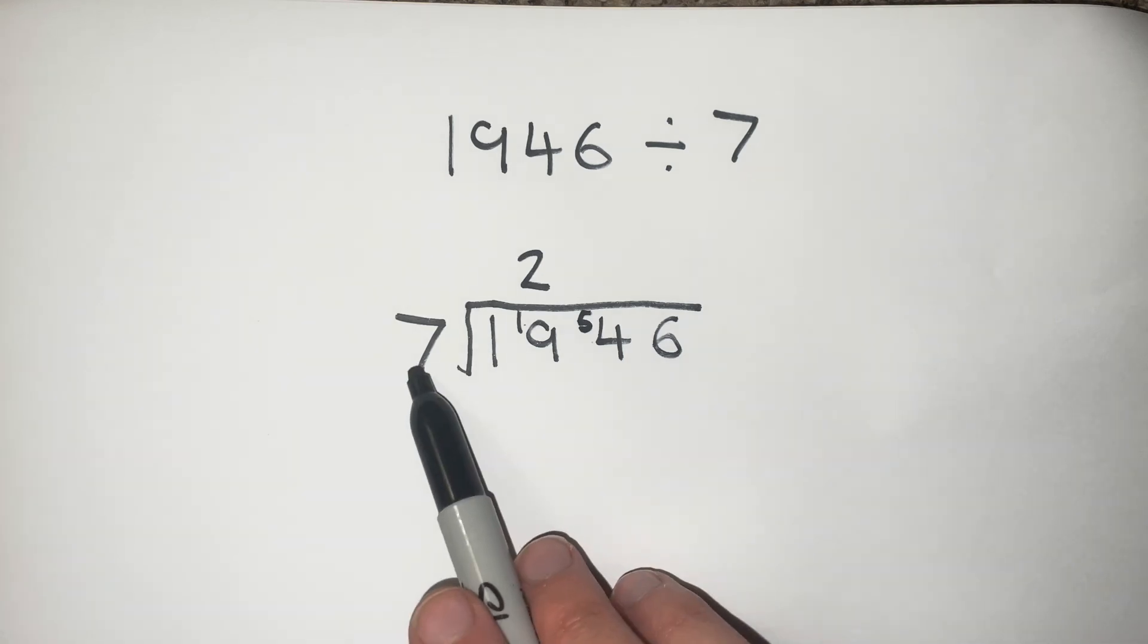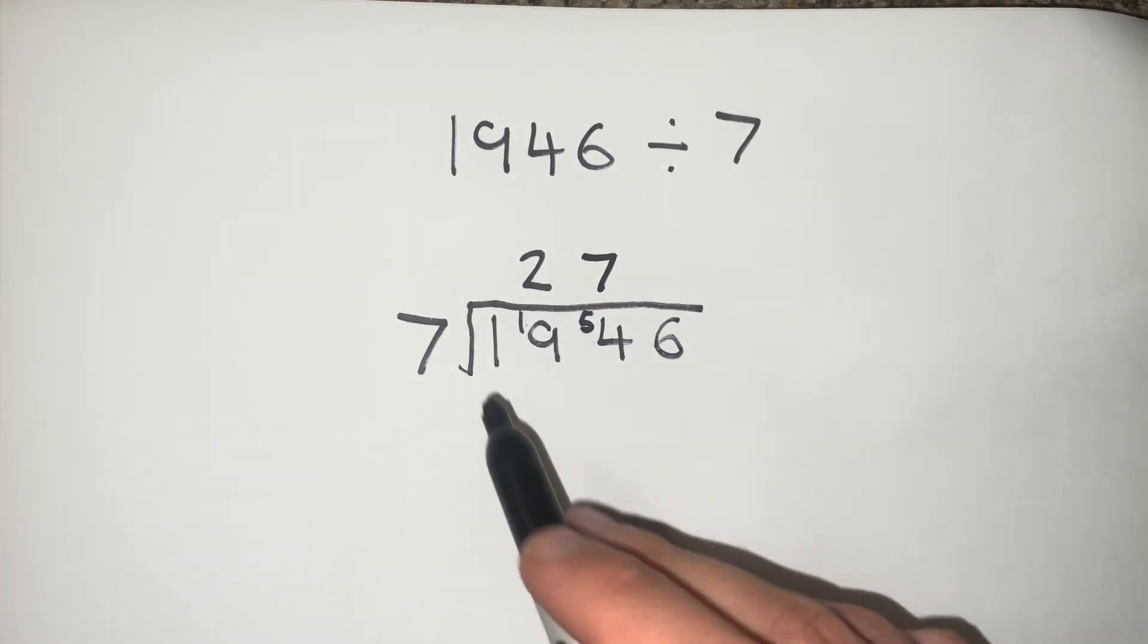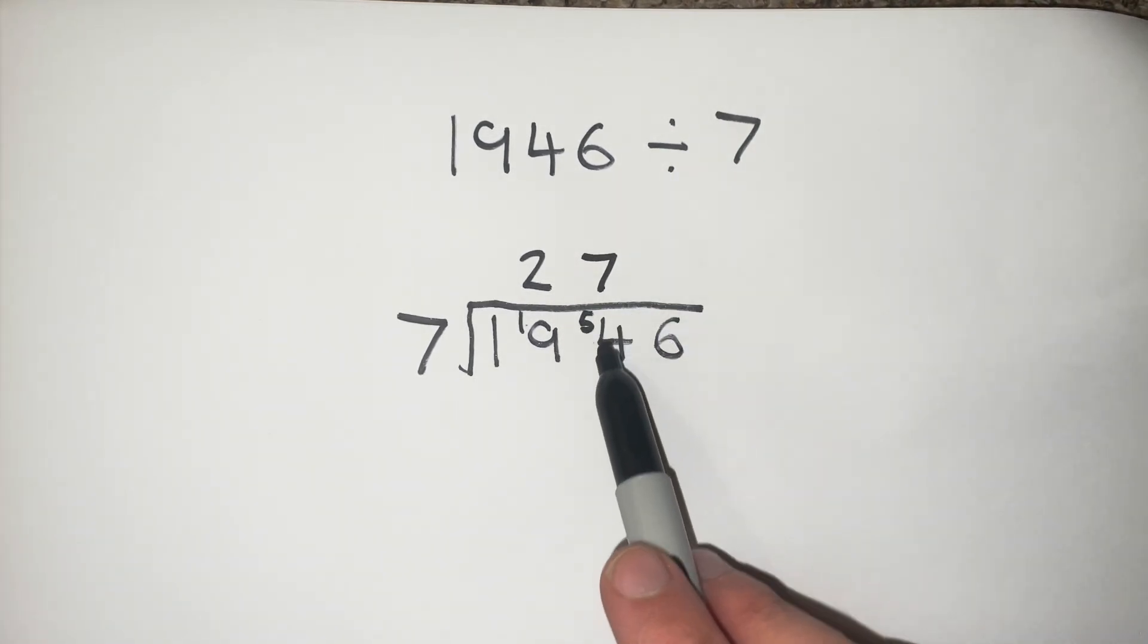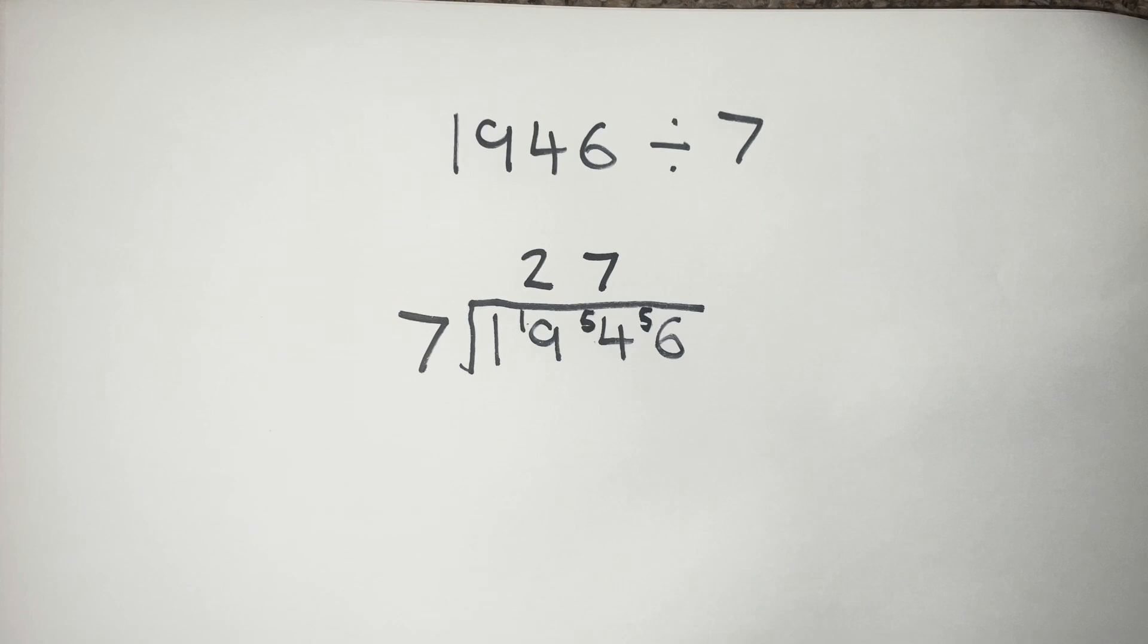Now we're asking how many 7s go into 54. Well that is going to be 7. 7 times 7 makes 49, and that means there's 5 left over to get to 54. So we're carrying all of that over to our 6, and that makes 56.